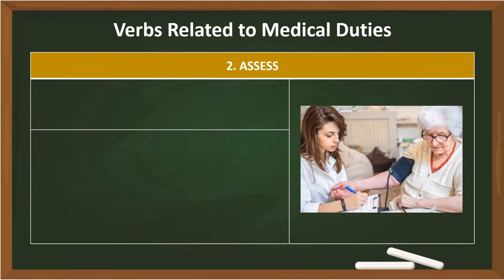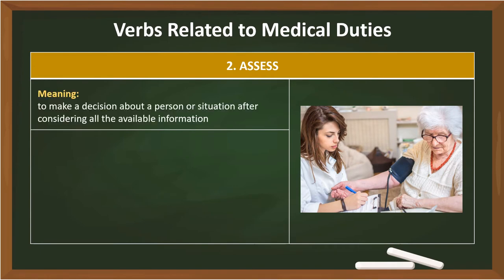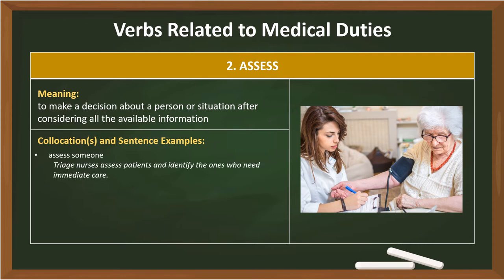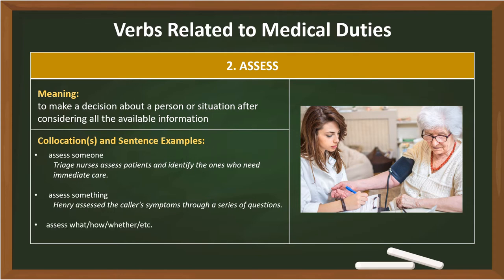2. Assess. Meaning: to make a decision about a person or situation after considering all the available information. Collocations: Assess someone — Triage nurses assess patients and identify the ones who need immediate care. Assess something — Henry assessed the caller's symptoms through a series of questions. Assess what/how/whether — They assess whether patients require urgent treatment.